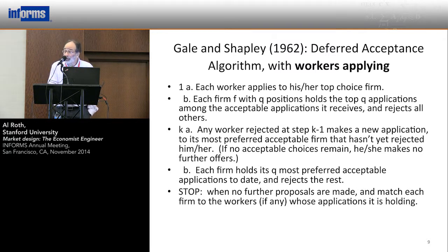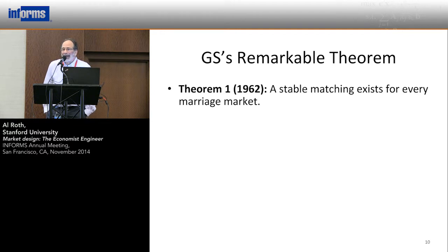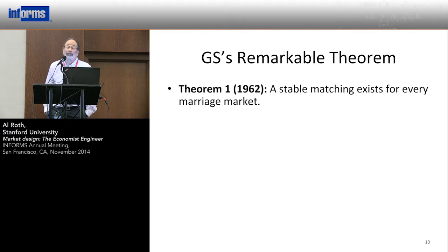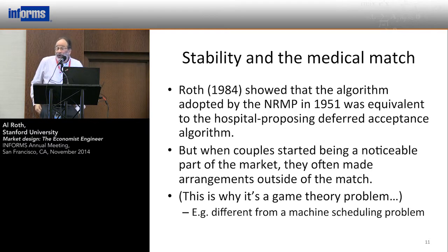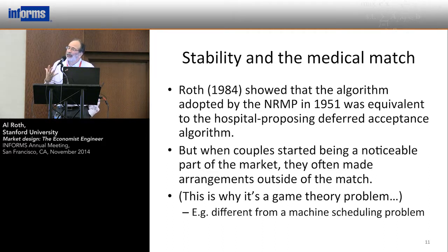This produces a stable matching — one that doesn't have any blocking pairs. Suppose I'm a student matched to my third choice. My potential blocking pairs are my first and second choice firms. The reason I'm matched to my third choice is I first got rejected by my first choice and then by my second choice. So although I would have preferred to work for them, they would not prefer to have hired me. This is a stable matching. When I first looked into this, what I found was that in the 1950s, the medical match had done something equivalent — it produced a stable matching, anticipating Gale and Shapley's insight, although not their analysis.